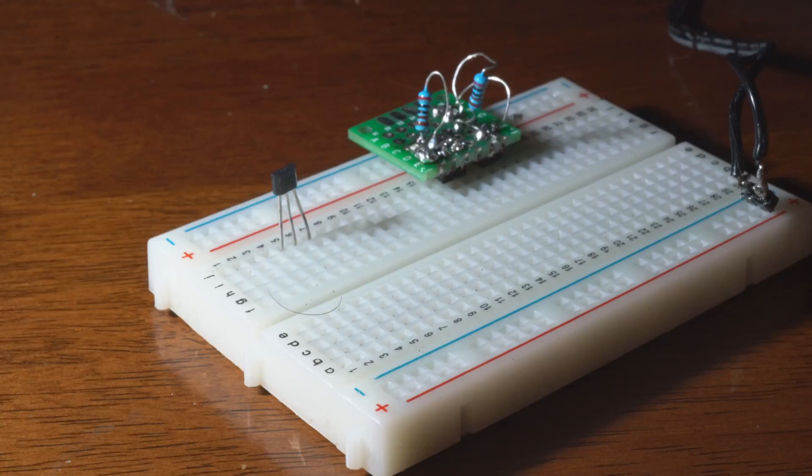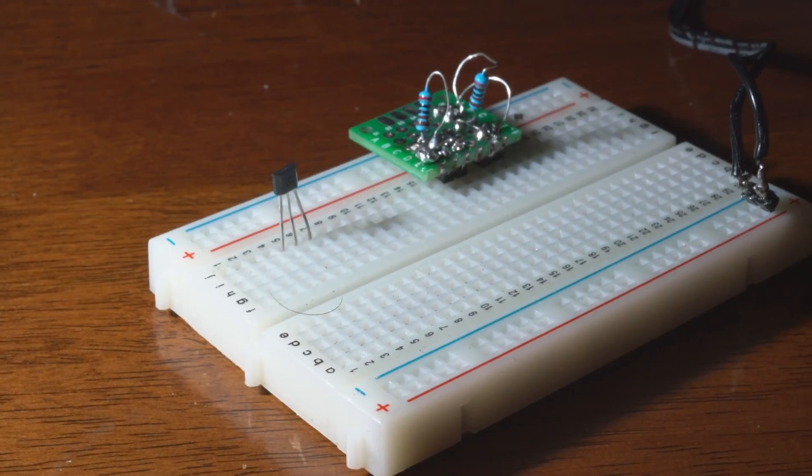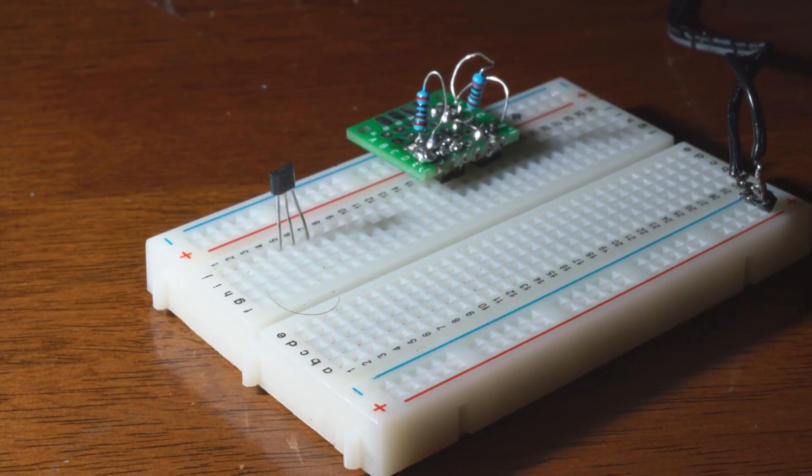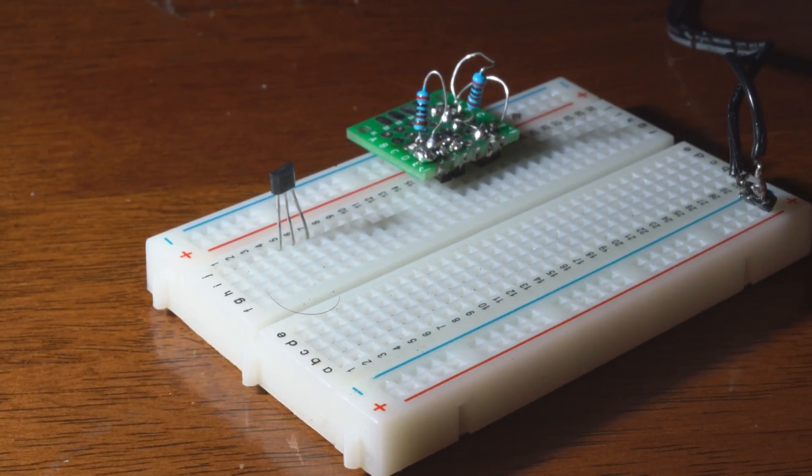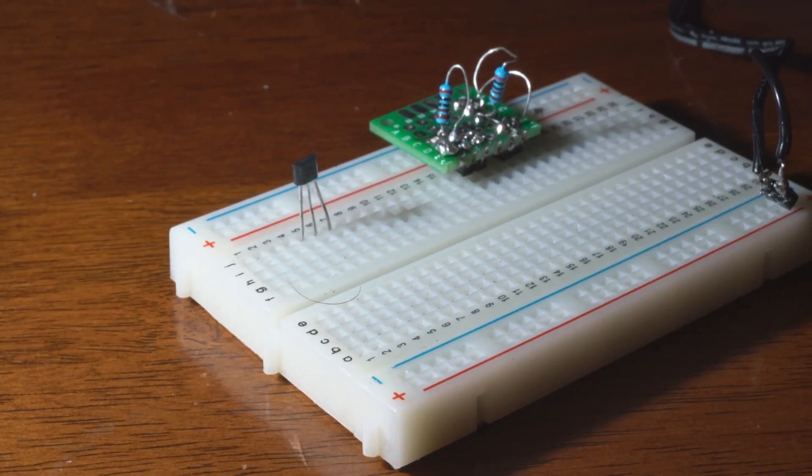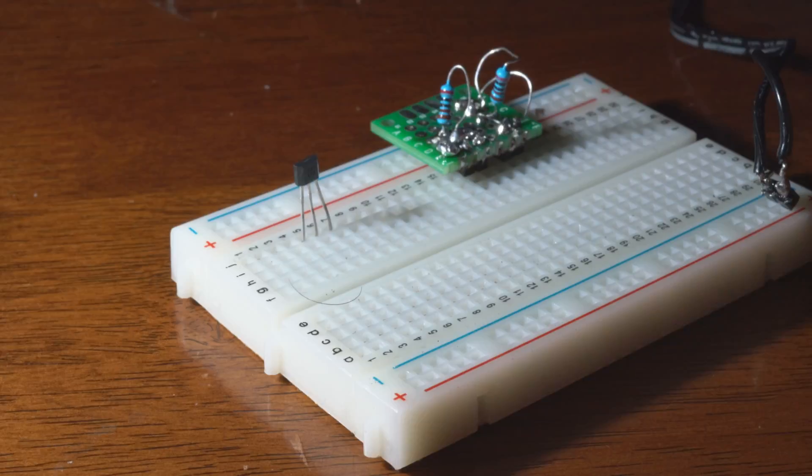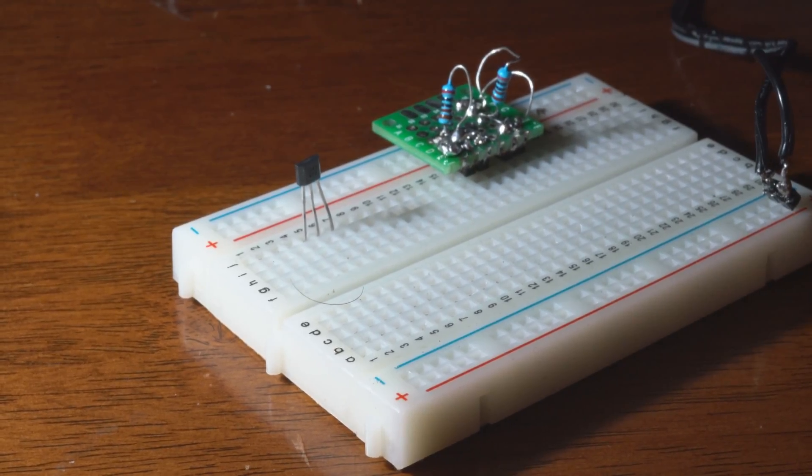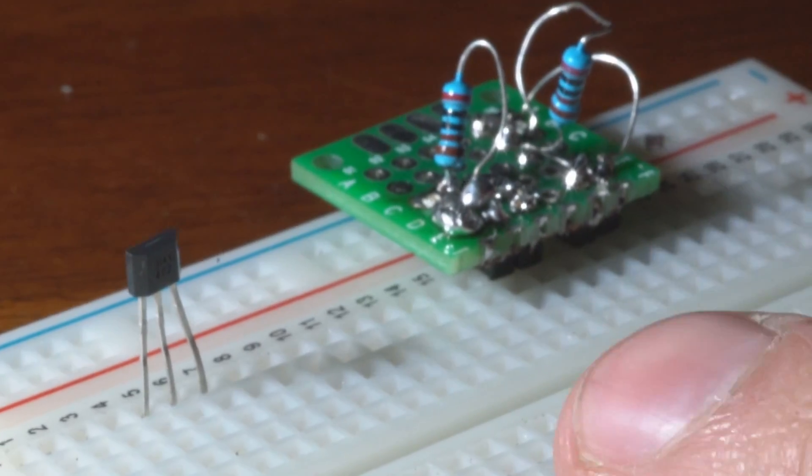This is for the axis if the program has an error and it tries to run too far and clash with the structure. This sensor will trigger a signal to the Arduino to say stop, turn everything off, there's a problem and it won't go any further.